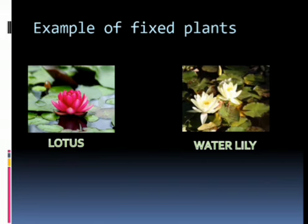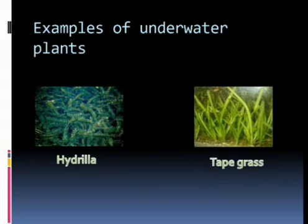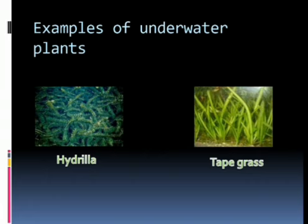Examples of underwater plants: hydrilla and deep grass are examples of such plants. As these plants are completely submerged under water, they have narrow and thin leaves and flexible stems that allow the plant to resist water currents. They breathe through their body surface and do not have stomata.